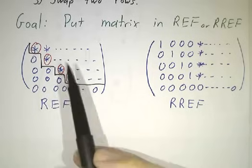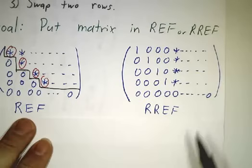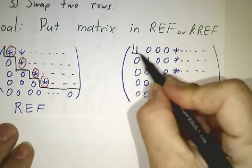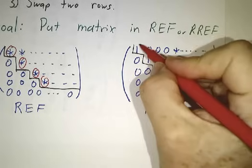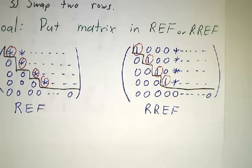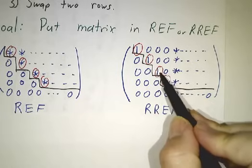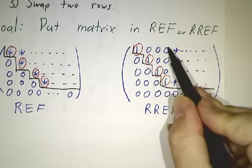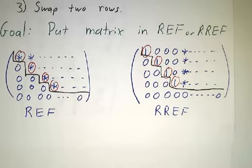The pivots can be one, two, three, or more steps to the right of the previous pivot. Reduced row echelon form requires row echelon form plus two extra conditions: we rescale the rows so that the pivots are all equal to one, and above each pivot is nothing but zeros. We can put any matrix in reduced row echelon form, and furthermore, there is only one reduced row echelon form corresponding to that matrix — we call that the reduced row echelon form of the matrix.